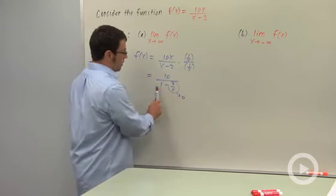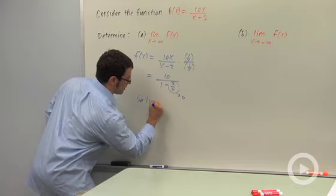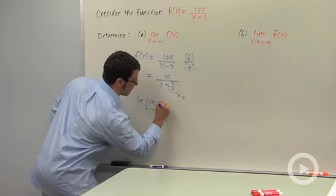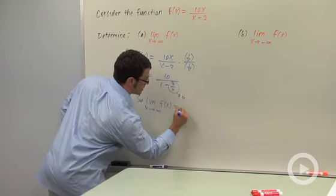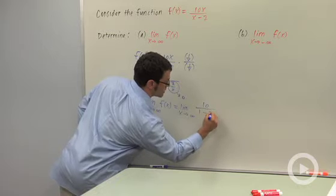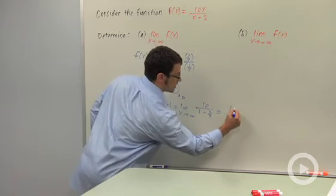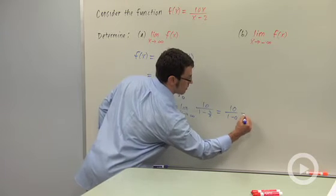And so the rest is going to 10 over 1 minus 0. So the limit as x approaches infinity of f of x is the limit as x approaches infinity of 10 over 1 minus 2 over x. Now this piece goes to 0, so this limit is 10 over 1 minus 0, or 10.